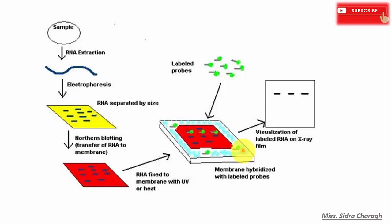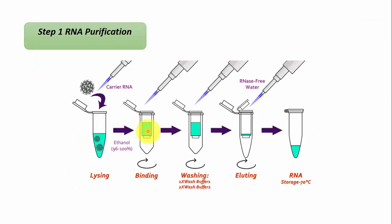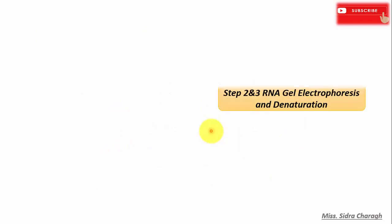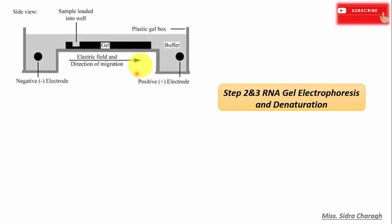Now let's discuss these steps one by one. The first step is RNA purification — we purify RNA from our target samples. After purification, the next step is RNA gel electrophoresis and denaturation.